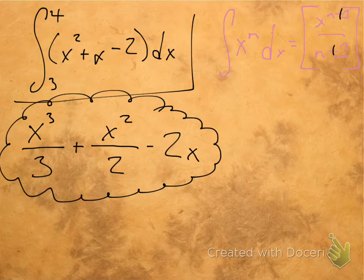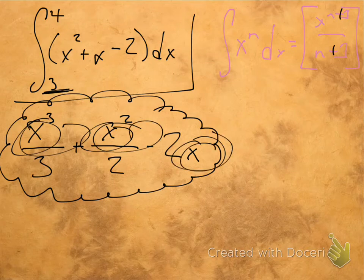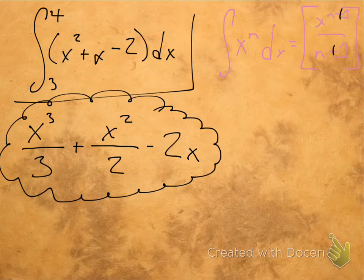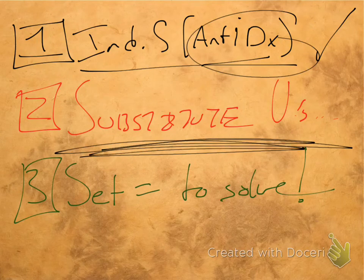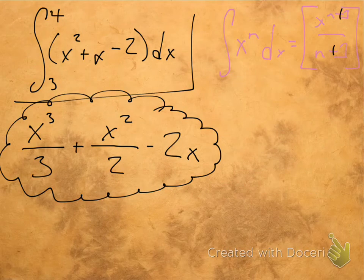Okay, and so what we need to do is we need to go in and everywhere we see an x in this equation, we're going to plug in our lower limit of integration. Then we're going to go back and wherever we see an x, we're going to plug in our upper limit of integration. So we're just going to do this for each value. And then we're going to get those two values and set them equal.